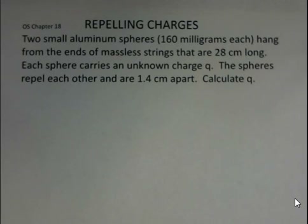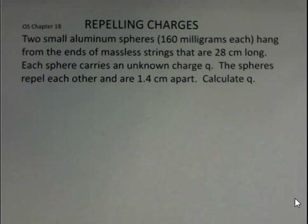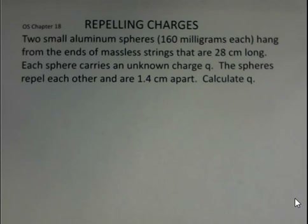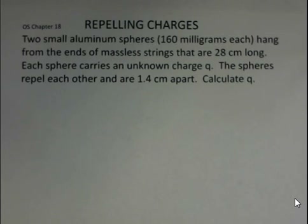We're going to calculate the charge that resides on two aluminum spheres that are carrying the same amount of charge. Each sphere has a mass of 160 milligrams and these spheres are at the ends of massless strings 28 centimeters long. The strings are attached at a common point above the spheres, and we want to know what charge they have in a situation where they repel each other such that they're 1.4 centimeters apart.